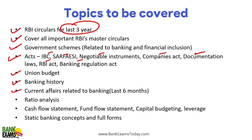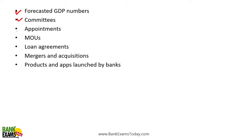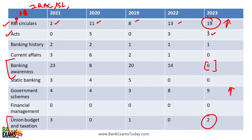Also cover union budget, banking history, current affairs related to banking (last six months is sufficient), ratio analysis, cash flow statement, static banking concepts, forecasted GDP numbers, committees, appointments, MOUs, loan agreements, mergers and acquisitions, and important products and apps launched by banks — this is part of banking awareness. RBI circulars and government schemes together can fetch you more than 20 marks out of 40. Only government schemes, RBI guidelines, and banking awareness can get you a lot of marks. So focus on RBI circulars, acts, government schemes, and banking awareness.